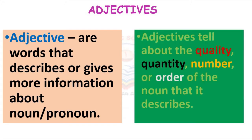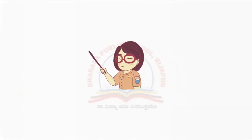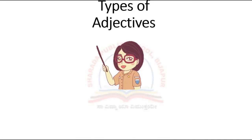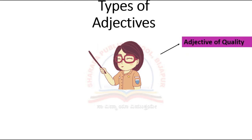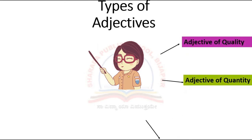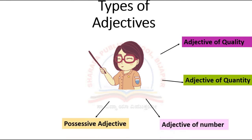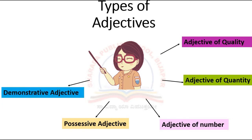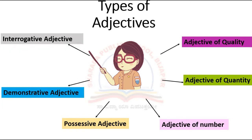Adjectives tell about the quality, quantity, number, or order of the noun that they describe. The types of adjectives are: adjective of quality, adjective of quantity, adjective of number, possessive adjective, demonstrative adjective, and interrogative adjective.